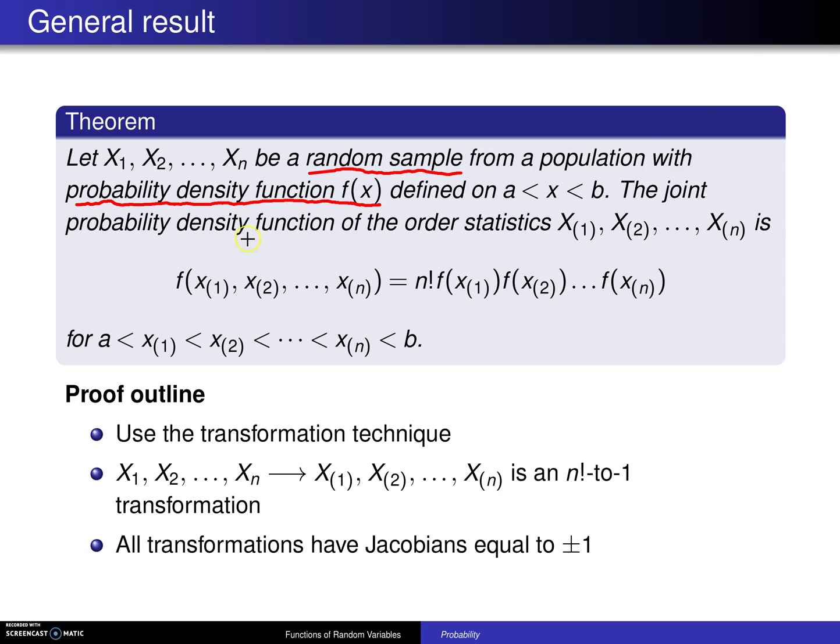So the result here says that the joint probability density function of the order statistics x1, x2, up to xn is n factorial times f of x1, f of x2, up to f of xn for order statistics that satisfy a is less than x1 is less than x2, up to xn is less than b.